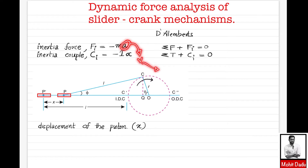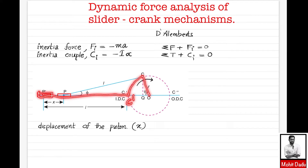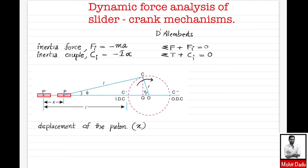Starting with the piston: acceleration can be obtained from velocity, and velocity from displacement. Here we have a slider crank mechanism where P' is the piston position corresponding to the inner dead center. When the crank rotates by angle theta from the horizontal, the piston slides to position P. We are analyzing this instantaneous position where the crank makes angle theta, crank link length is r, connecting rod length is l, and the connecting rod angle is phi.